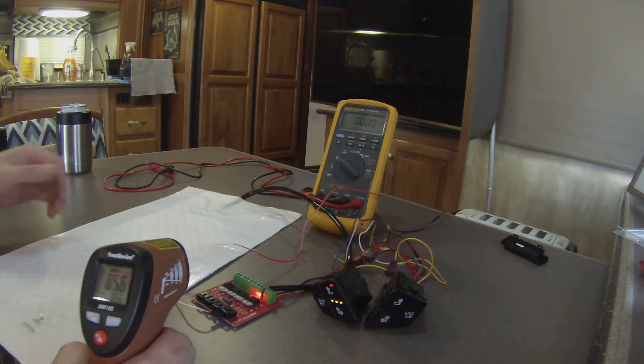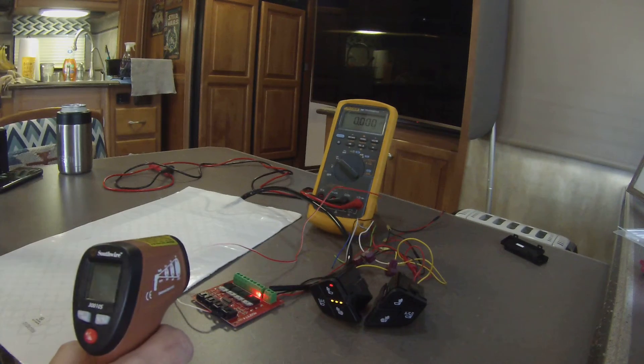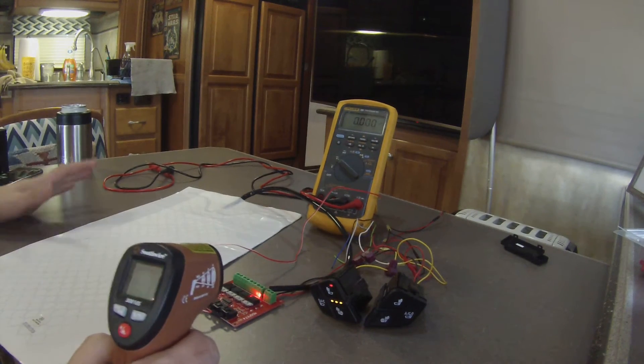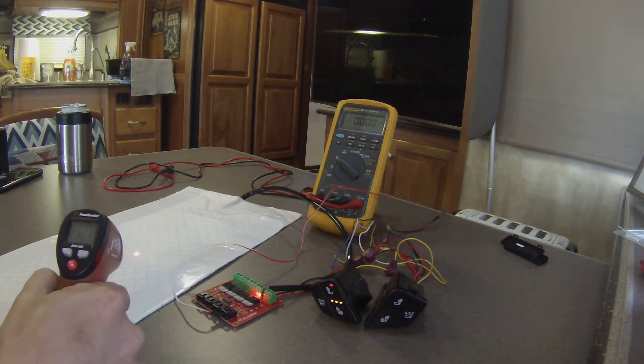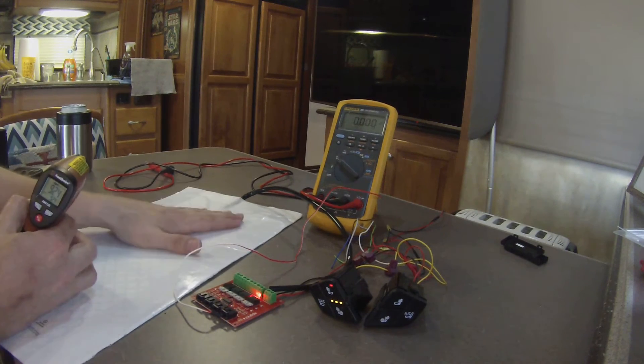Now we'll go to high. Boom. As you see, the light stays on. That means we're putting full 12 volts straight across to it. We're up to 92 degrees, still climbing. So this thing's getting warm pretty good.